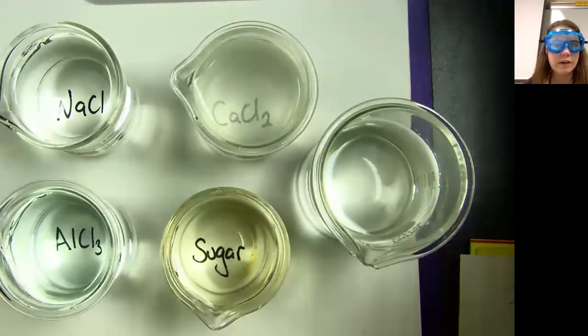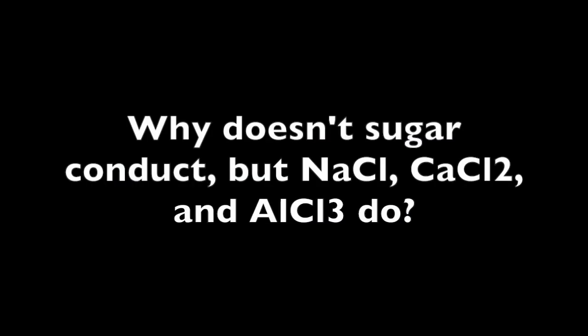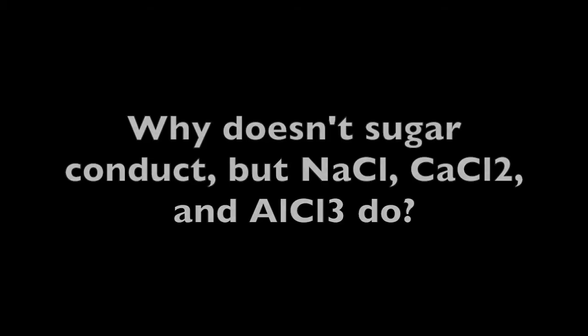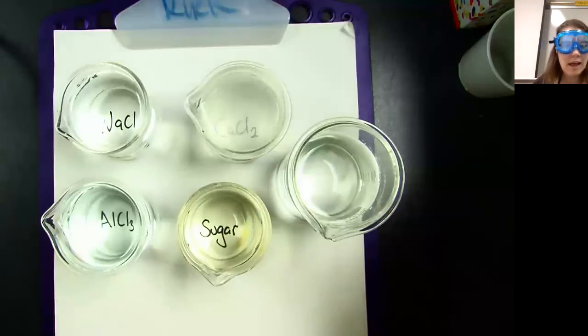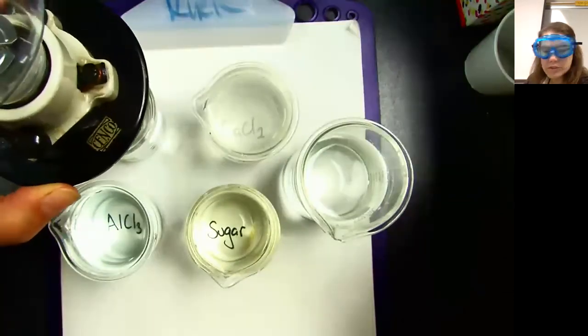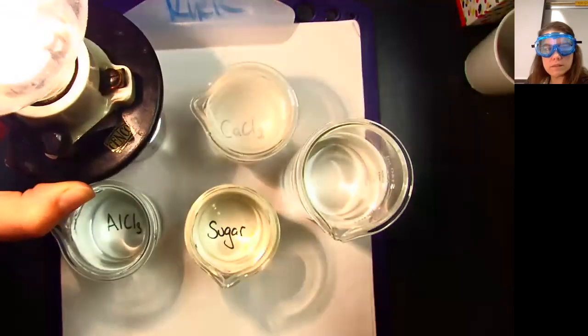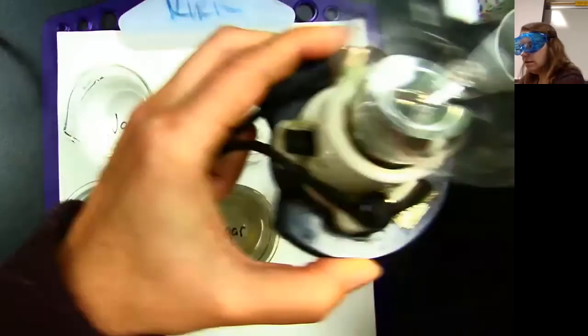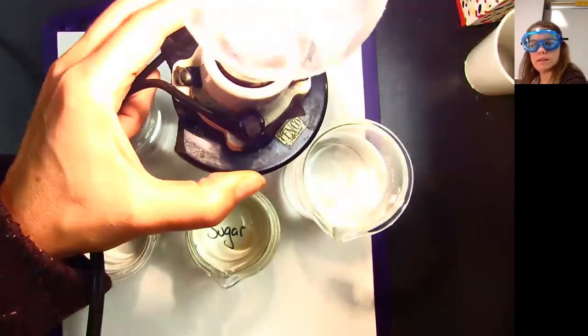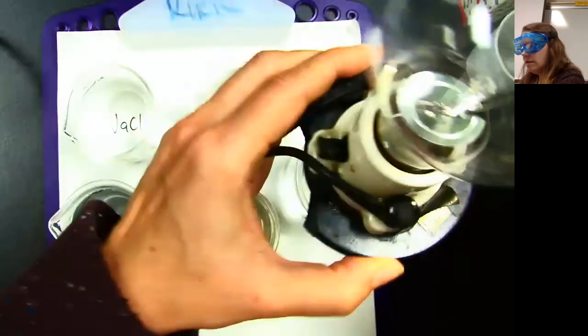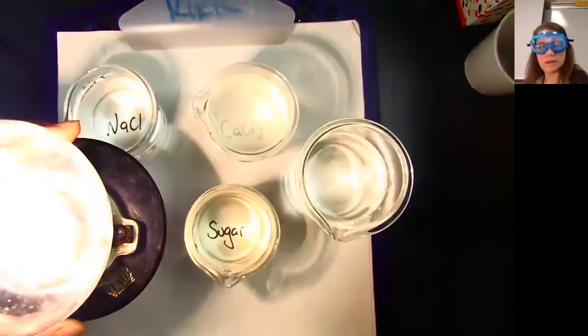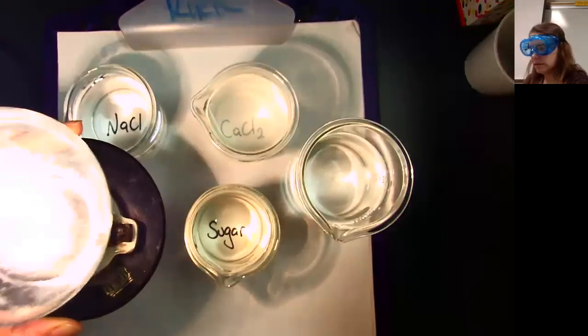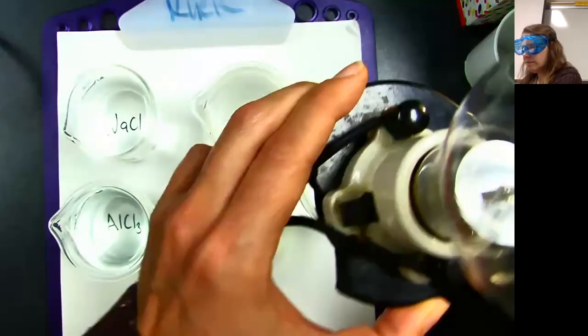So what's different about sugar compared to these other three? I also want you to see if you can figure out a little bit about the brightness. Try to notice about the brightness. Here again is sodium chloride, calcium chloride, aluminum chloride. Could you tell any difference? Yeah.